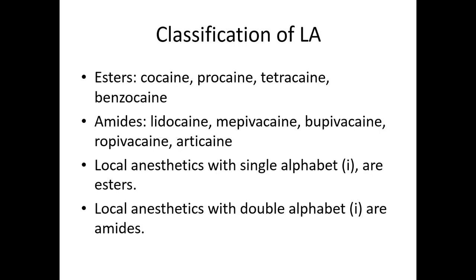Classification of local anesthetics: there are two types based on the intermediate chain - esters and amides. As a memorization tip, local anesthetics with a single letter 'i' in their name are esters; those with double 'i' are amides. Esters include cocaine, procaine, tetracaine, and benzocaine. Amides include lidocaine, bupivacaine, ropivacaine, and articaine.